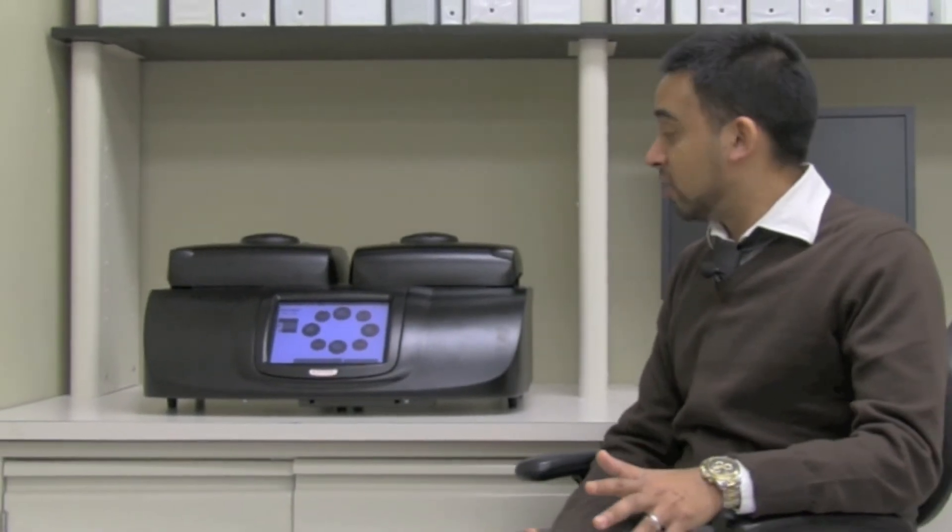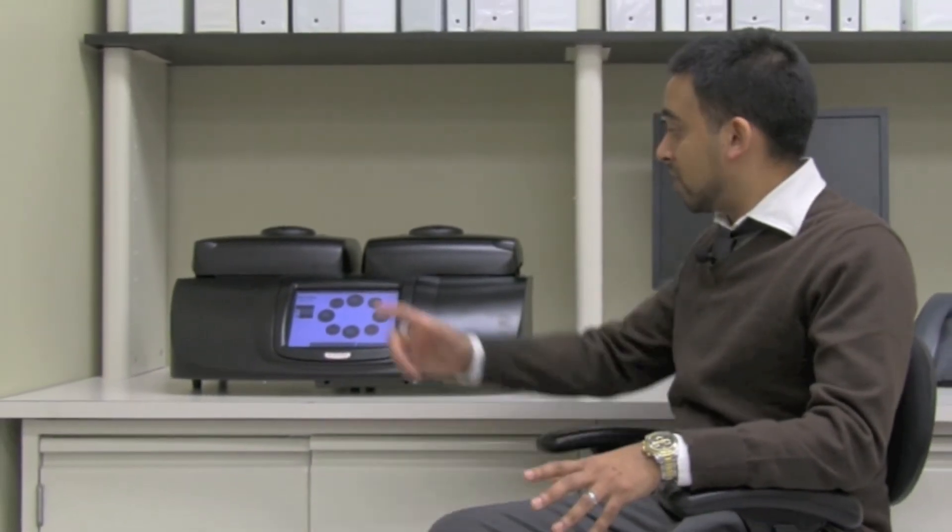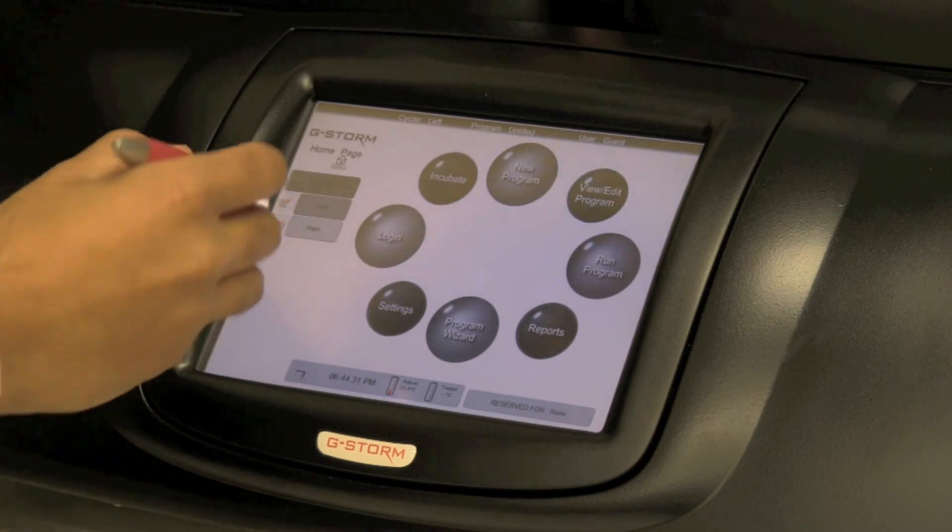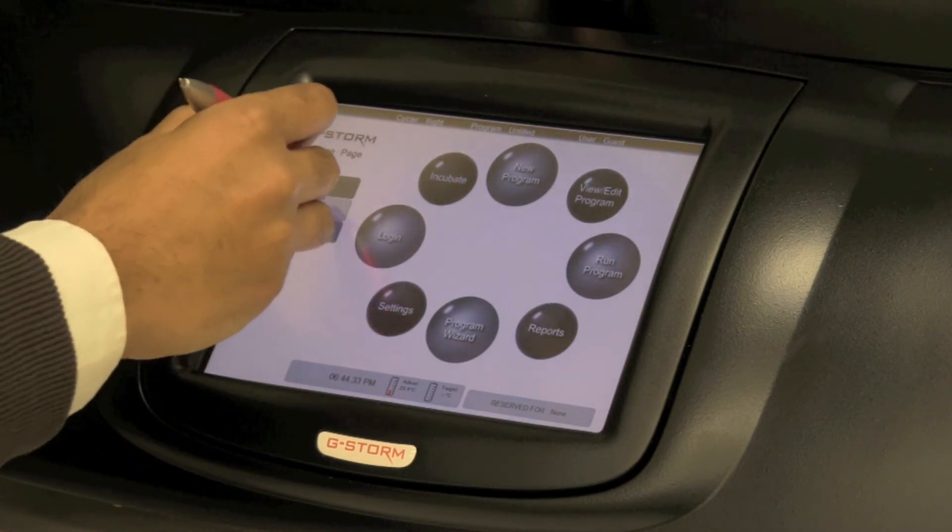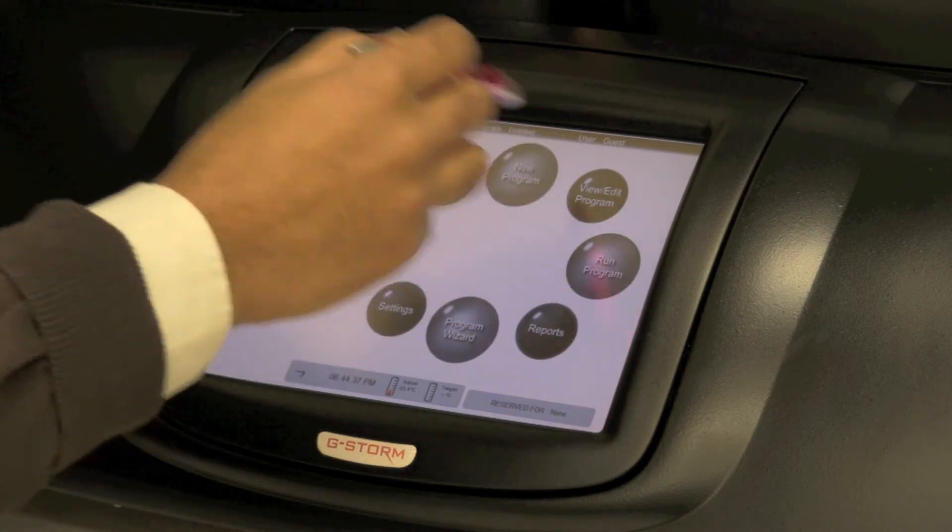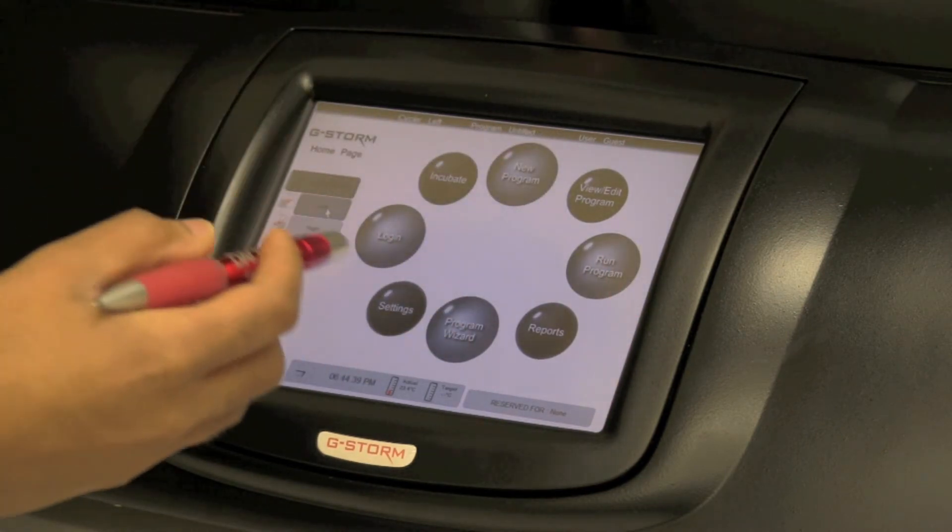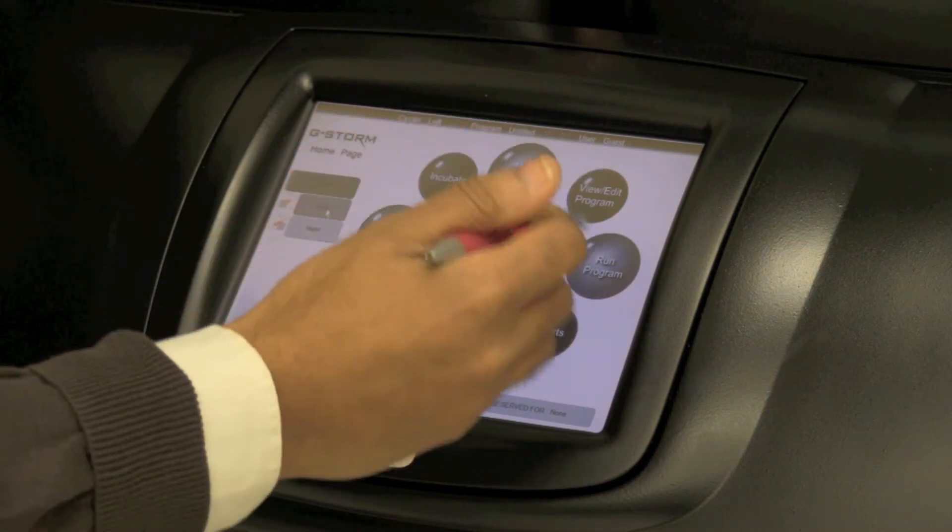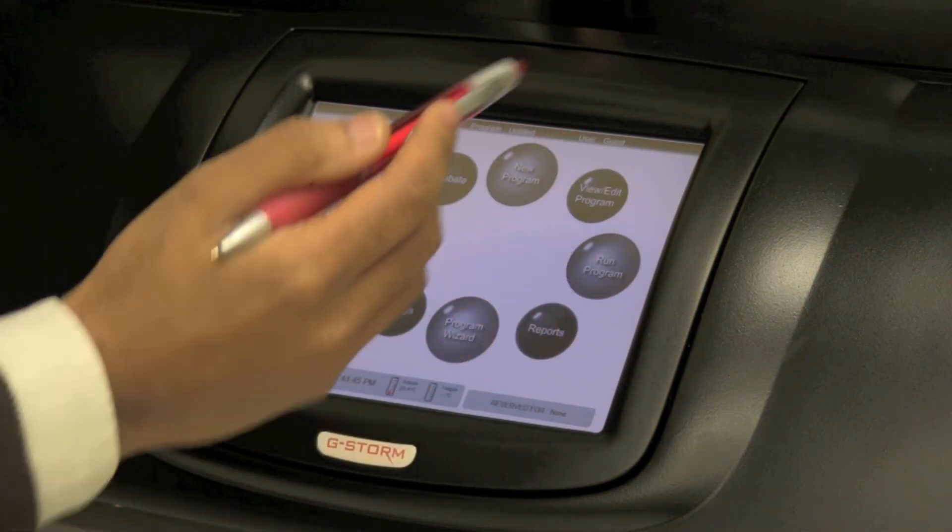Now that we're talking about the software, let's take a closer look at the large 8.4-inch touchscreen interface that we mentioned earlier. So here we have the home screen for the G-Storm GS2. We can quickly move between left and right block as simply as that. You can also see there's a number of options available to us. If we just take a few of these for example, we've got new program, view edit program, run program, reports and the program wizard.